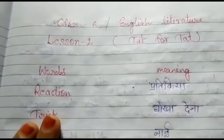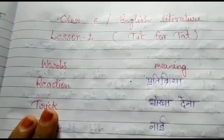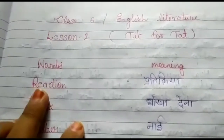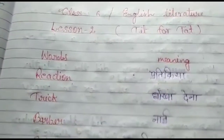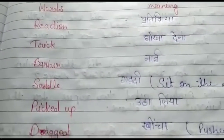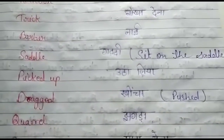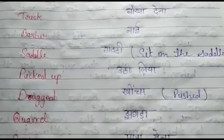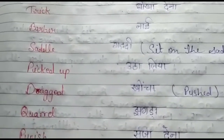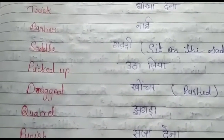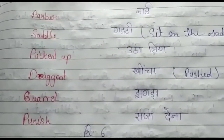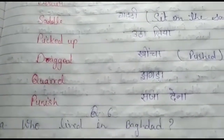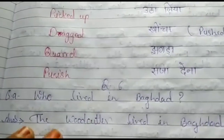Now read the word meanings in your fair copy. Reaction — pratikriya. Trick — dhokha dena. Barber — nai. Saddle — gaddi. Picked up — uthalia. Dragged — khicha. Quarrel — jhagda. Punish — saja dena.